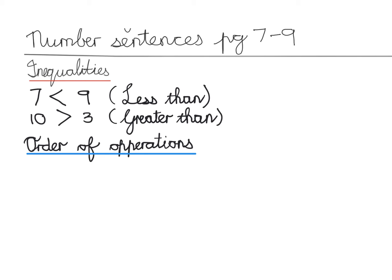You know your BODMAS rule, and I'm going to write it down now. You can write this in print, one letter per line so we can do them underneath each other. B-O-D-M-A-S, one per line. B stands for brackets, and we do brackets inside out.